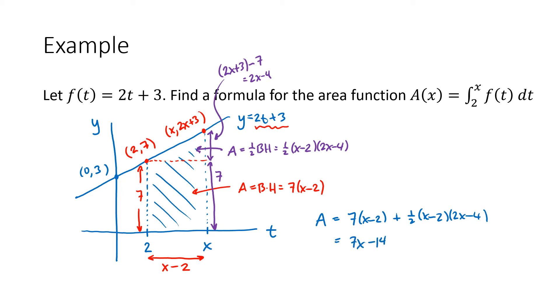So we're going to get 7x minus 14. This is going to be 1 half. If I FOIL that out, I'm going to get 2x squared minus 8x plus 8. Multiply through by that 1 half. x squared minus 4x plus 4. So I've got x squared, 7x minus 4x, that's plus 3x, and then negative 14 plus 4, that's minus 10. So that's my area function simplified.